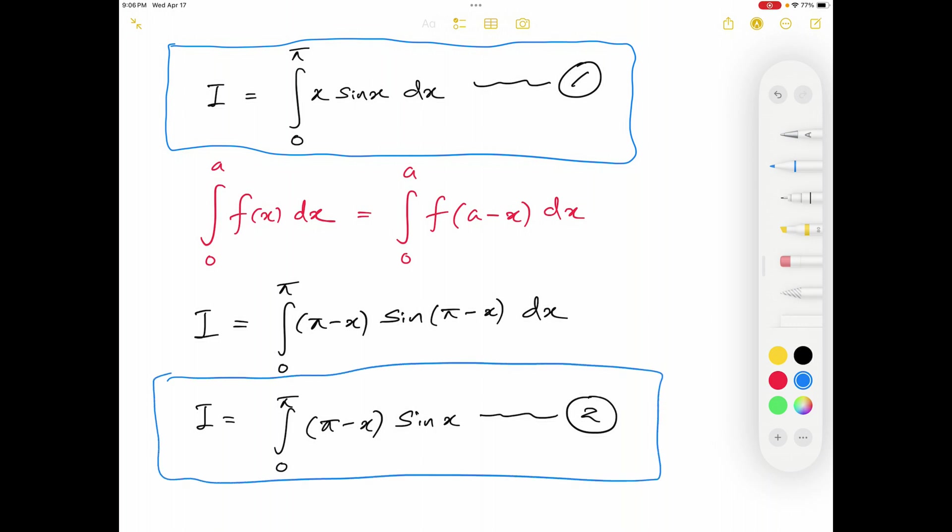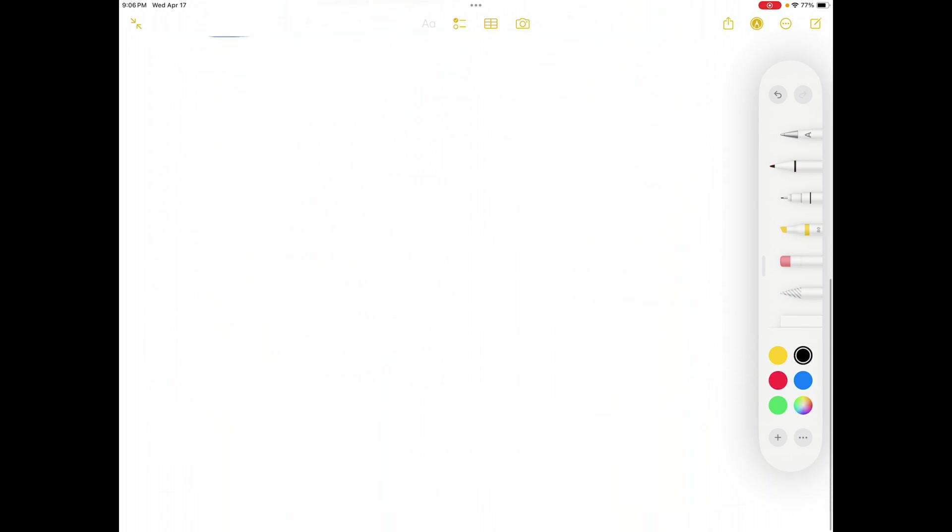What I'm going to do next is I'm going to add these two equations. If I add those two equations, on the left hand side I will have 2I. On the right hand side I will have x sin x and π minus x times sin x. Those two functions will be added. So let me write it as that.